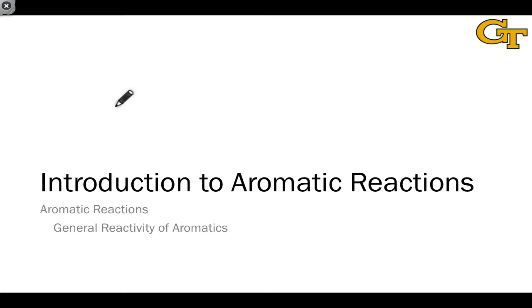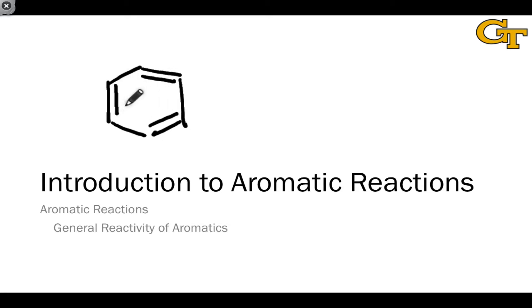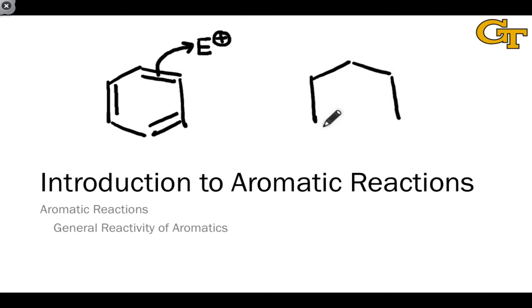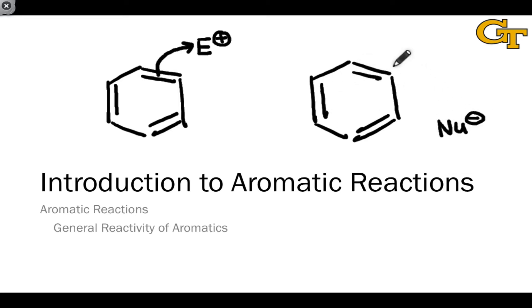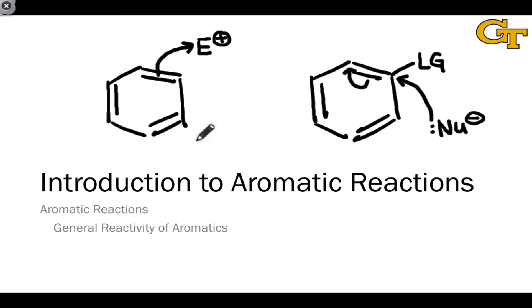Although we just looked at three examples of reactions of benzene that do not occur, aromatic compounds can still engage in chemical reactions. In general, we can divide aromatic reactivity into two classes: those reactions that involve the aromatic ring as a nucleophile, donating a pair of electrons to an electrophile E+, and those that involve the aromatic ring as an electrophile, accepting a pair of electrons from a nucleophile nu-. Because aromatics are generally electron-rich due to their high-energy pi electrons, we see the ring acting as a nucleophile more commonly than as an electrophile.